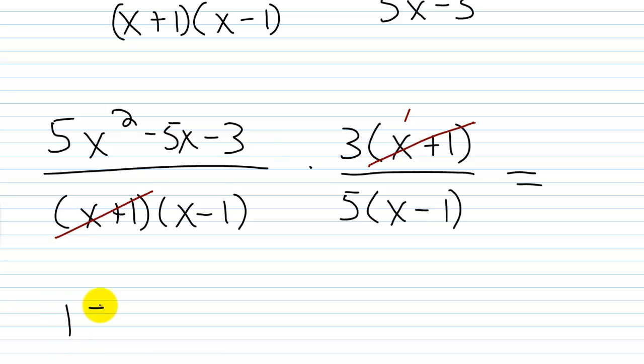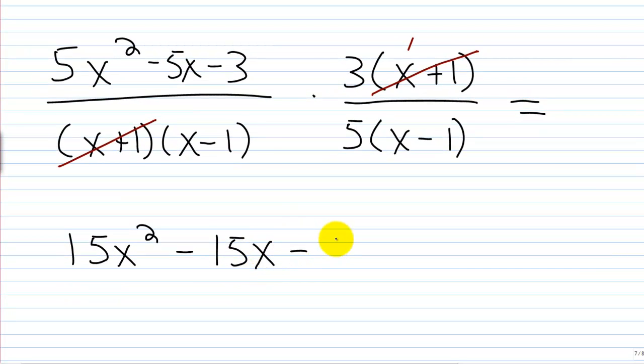3 times 5x squared is 15x squared. Minus 3 times 5x, that's 15x. And then minus 3 times 3, that's 9.